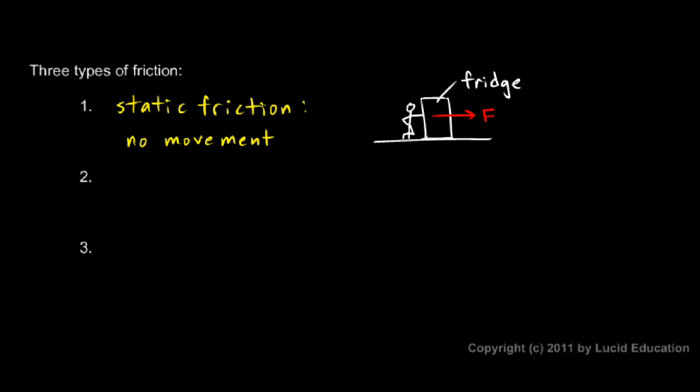if there's a force to the right, why doesn't the refrigerator move to the right? And the reason is because the force you're pushing with is not big enough to overcome the force of friction down here between the refrigerator and the floor. So if you want to draw both forces, you would have the force that you're pushing with, and then equal and opposite to that, you'd have the force of friction, which we'll call a little f.